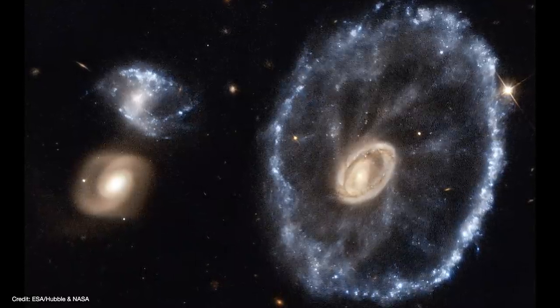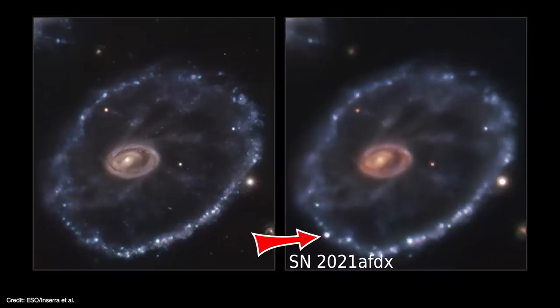Now, with so many massive star clusters forming, there is undoubtedly going to be a number of supernovae. In fact, Supernova 2021 AFDX was detected in November of last year. The bright hydrogen emission line is the telltale sign that this was a Type 2 core collapse supernova of a massive star.